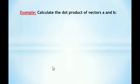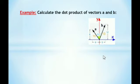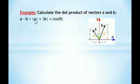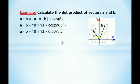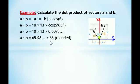Example: Calculate the dot product of vectors a and b. Look at the diagram. We will calculate the dot product using two methods. The magnitude of a is 10, the magnitude of b is 13, and the angle between them is 59.5°. Using the first formula: a·b = |a||b|cosθ. Putting in the values — |a| = 10, |b| = 13, angle = 59.5° — and multiplying, we get a·b ≈ 65.98, which rounds up to 66.